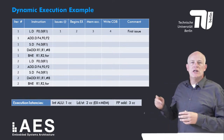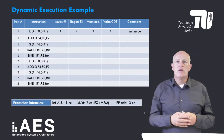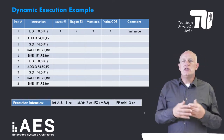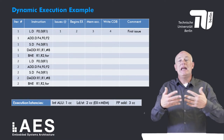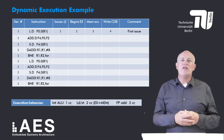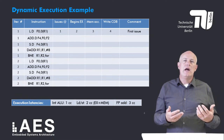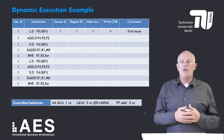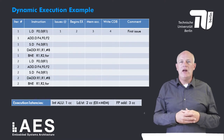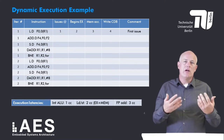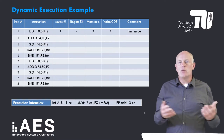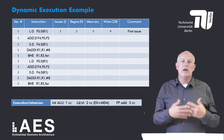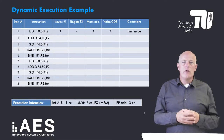The first instruction is the load. It is issued in clock cycle 1, starts executing — meaning the effective address is calculated — in clock cycle 2, accesses memory in clock cycle 3, and writes its result onto the common data bus in clock cycle 4. Since this instruction is the first one issued, it incurs no stalls.